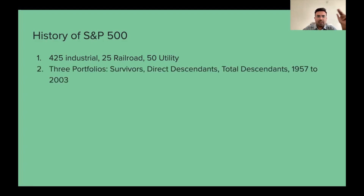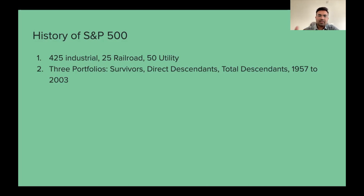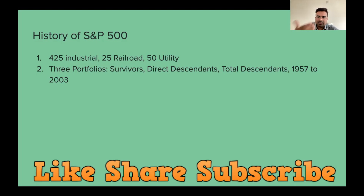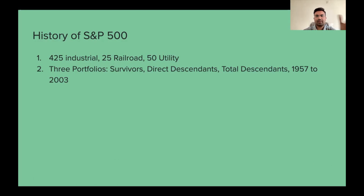What did Jeremy Siegel do? He made three portfolios for his research. This research was conducted around 2003-2004. The three portfolios are: Survivors, Direct Descendants, and Total Descendants. The period of research was from 1957 to 2003.